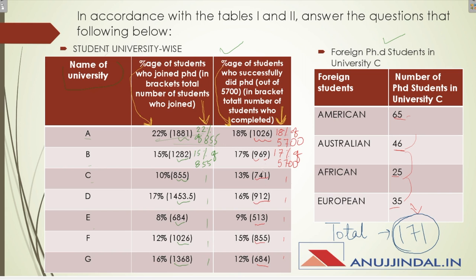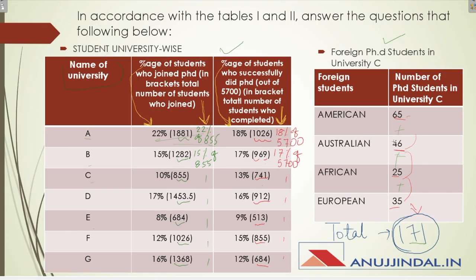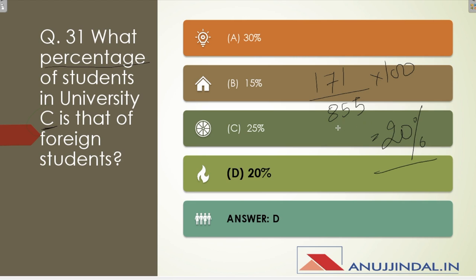Now let's start solving the DI questions. Question 31 asks: what percentage of students in university C are foreign students? We have calculated that there are 171 foreign students in university C, and the total students in university C is 855. So we do 171 upon 855 into 100, which gives us 20%. You just need to extract the values and put them in — it comes straight to 20%.